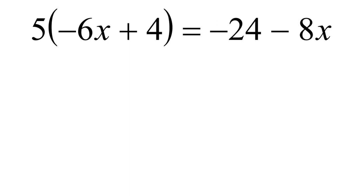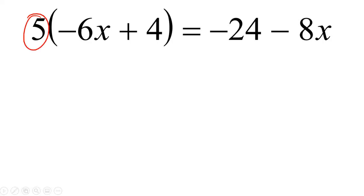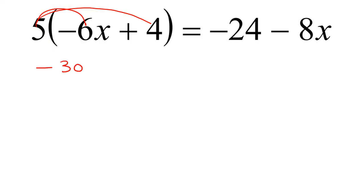With this question, notice that we see there is a bracket. So this five is going to multiply into the bracket, and that's going to end up giving us negative 30x plus 20. And then on the other side, we're just going to leave that as it is.